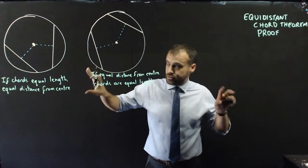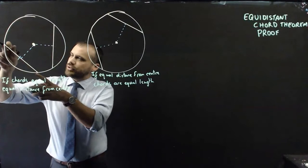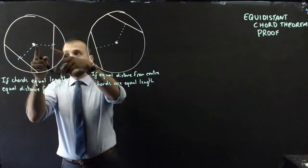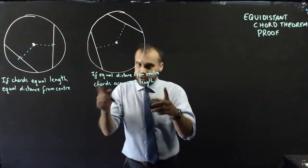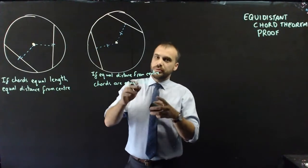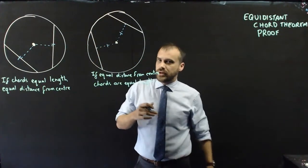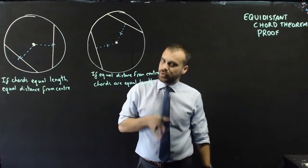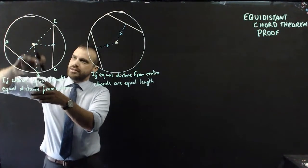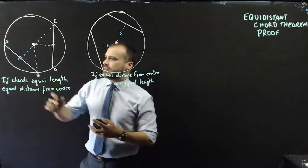These are different proofs. In this one I know this full length is equal to this length here, and what I'm trying to prove is that this length and this length are equal. In this proof I know that this and this are equal and I'm trying to prove therefore this and this are equal. But the methods are pretty similar both times. I've drawn in a radius there and a radius there, and now I think I can get started.